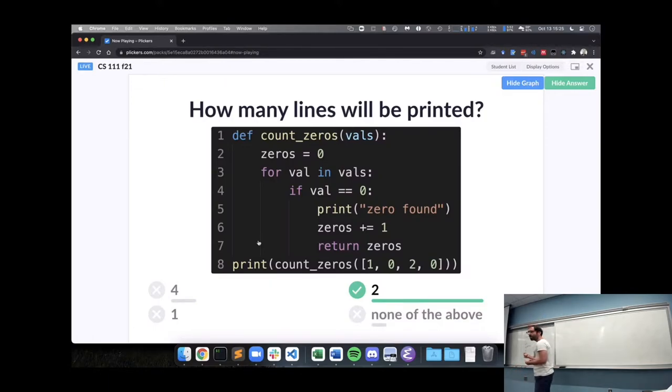So what issue are you thinking there might be with this line? Marcus clarifies: I thought it would be like, that means zeros equals zeros plus one, right? So then wouldn't zeros be equal to one, and then wouldn't that not count the other zero in the list for values?